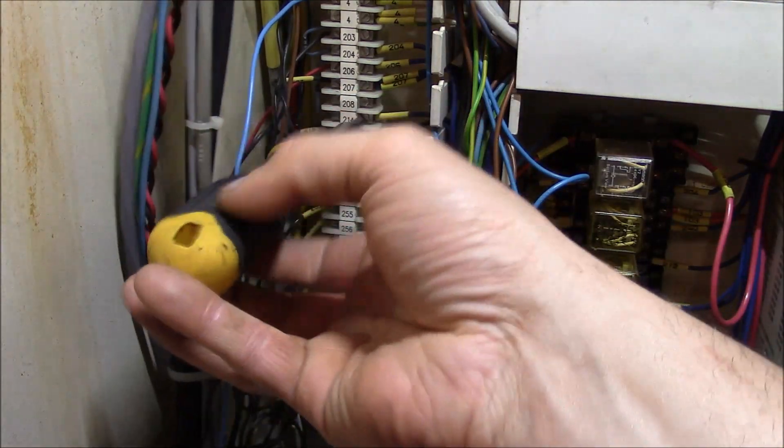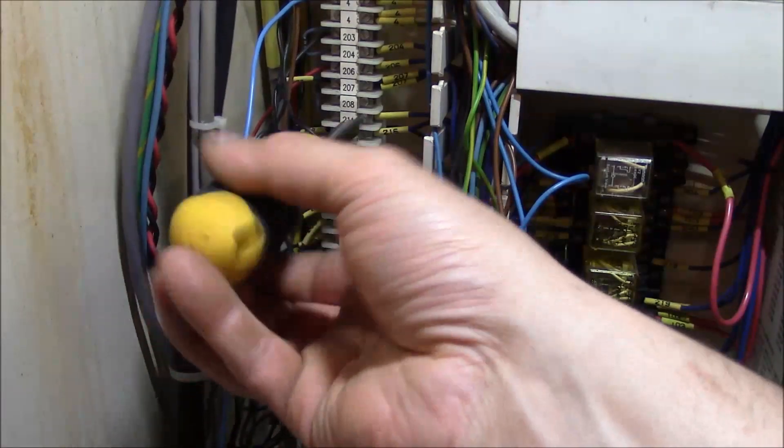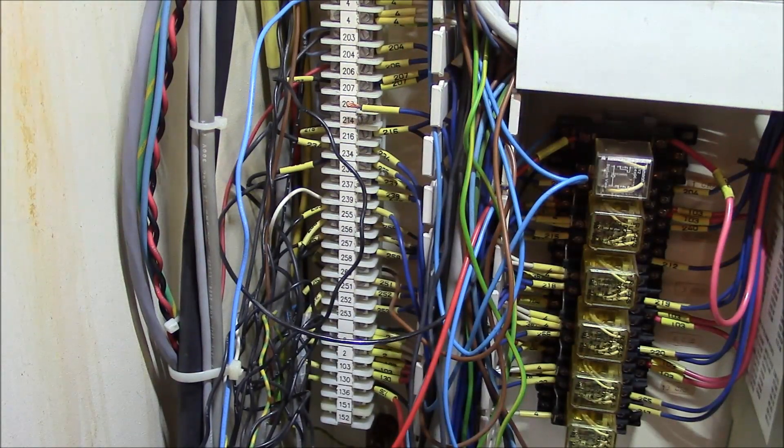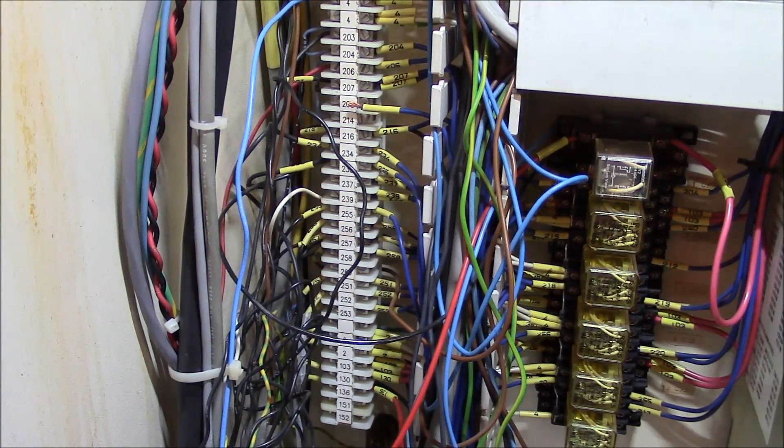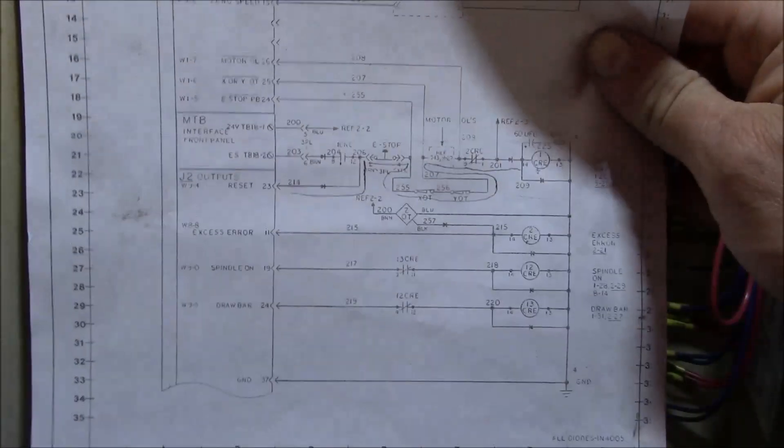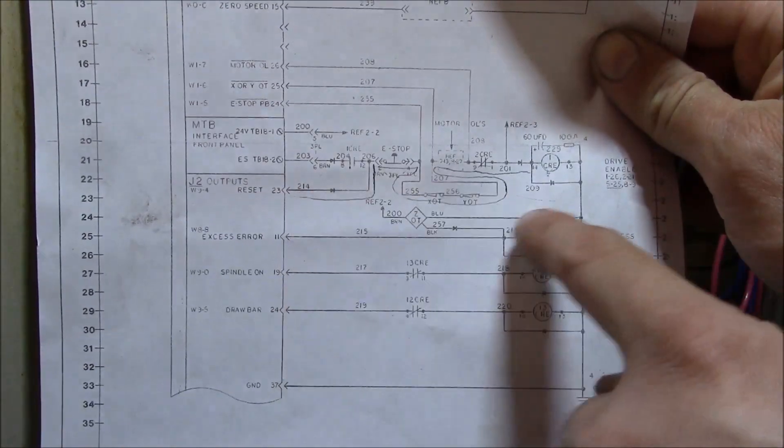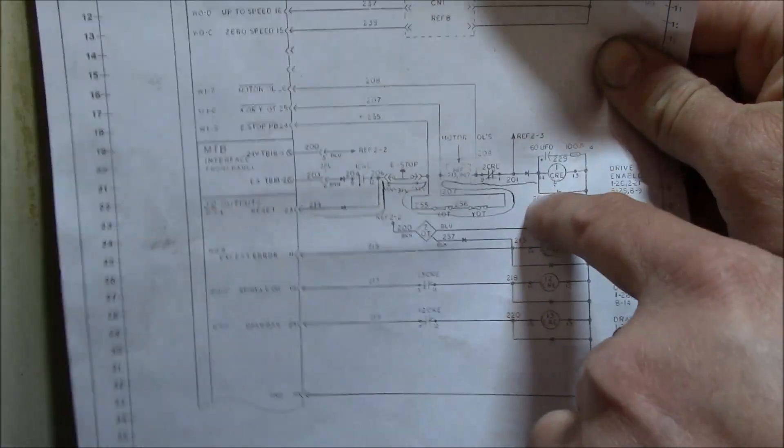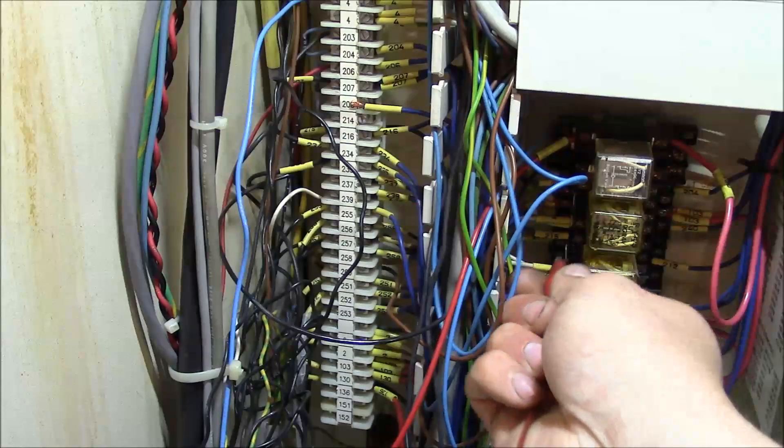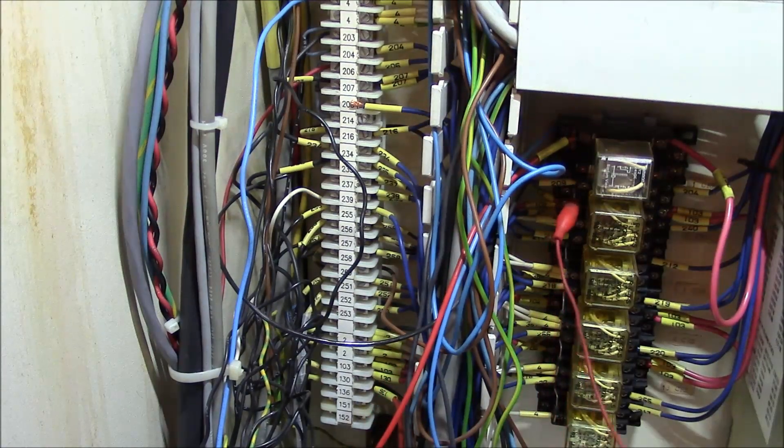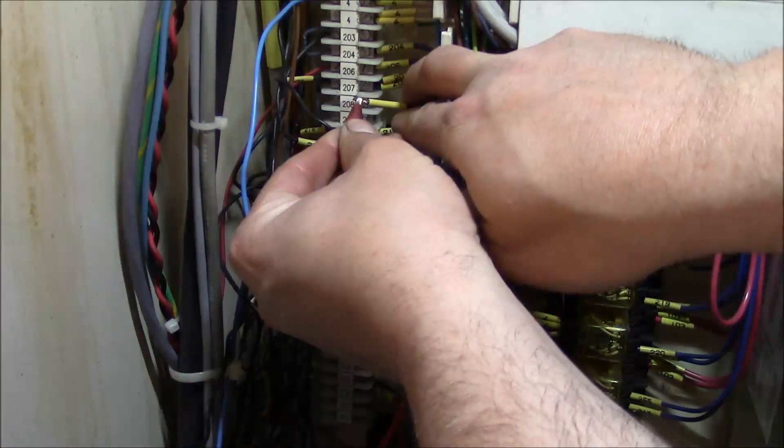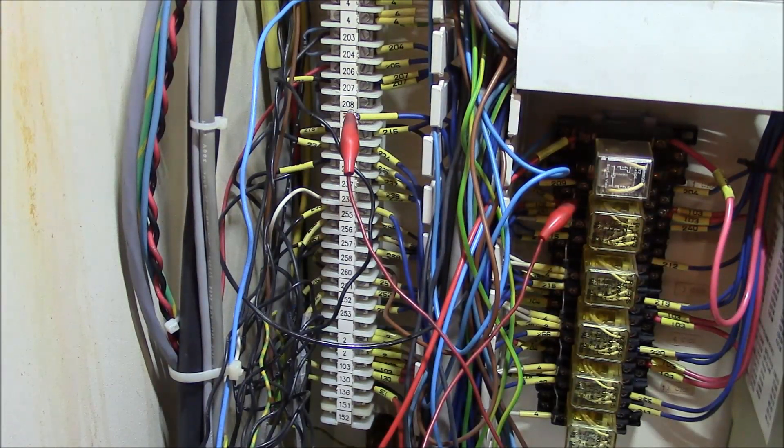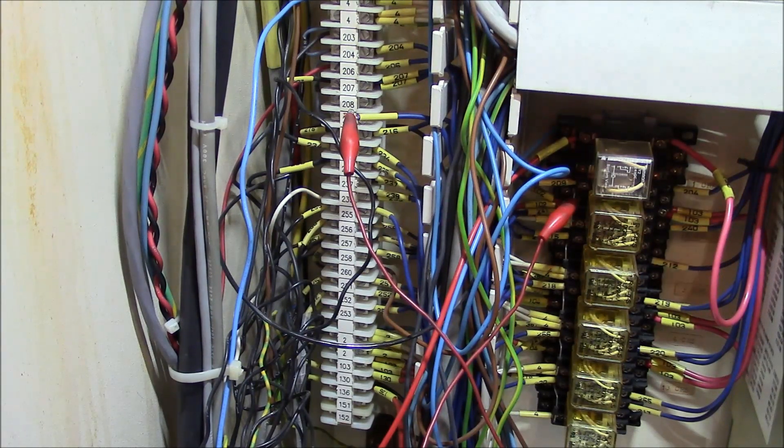Alright, so let's try a little bypass test here. Okay, so that wire right there is 214. So what we're going to do right now is connect directly from 214 over to 209 at the relay, and see if we can basically just bypass all of this malarkey here, and make the relay pull in. So 209 is right here on this diode. And 214. So I'm going to push the reset button. So nothing happened.